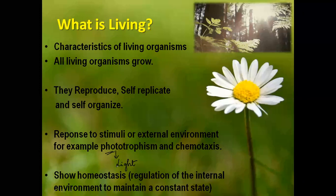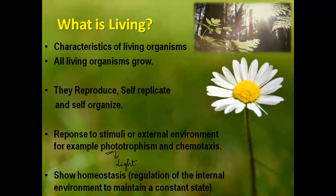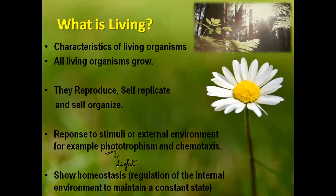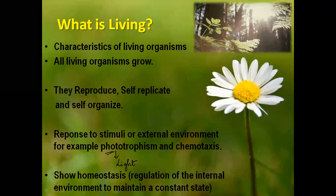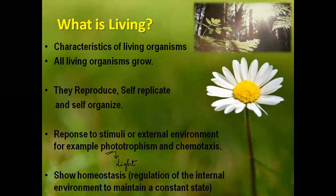Phototropism can also be when they go against the light. When a plant does not want light, that is also known as phototropism. Some plants like sunflowers love the light and turn towards the sun, whereas some plants do not love the light, so they turn against the sun. Both cases can be phototropism.